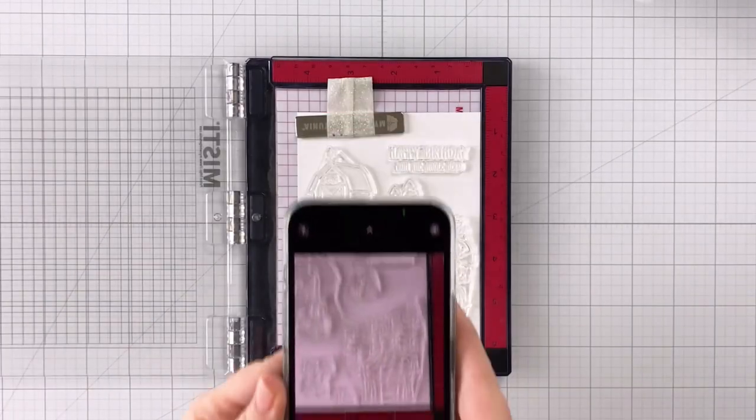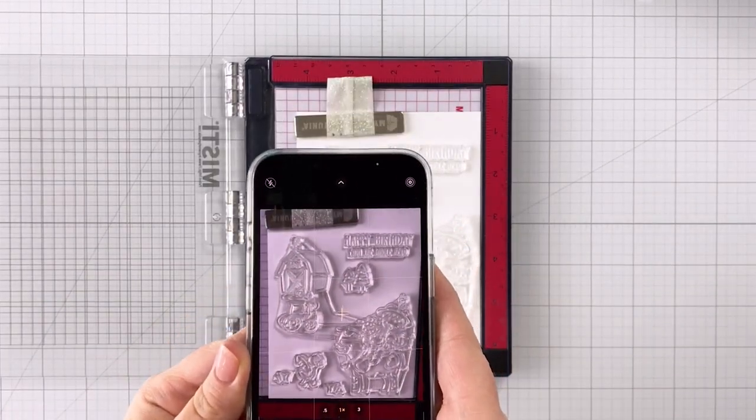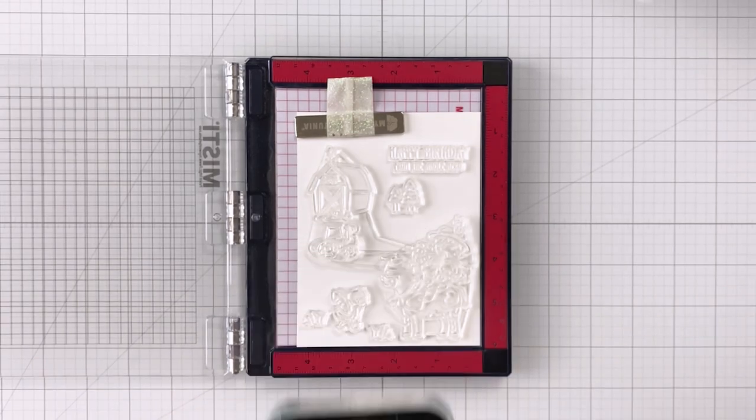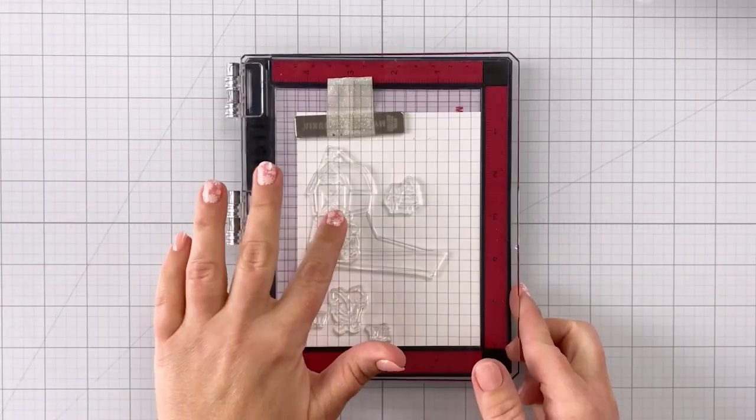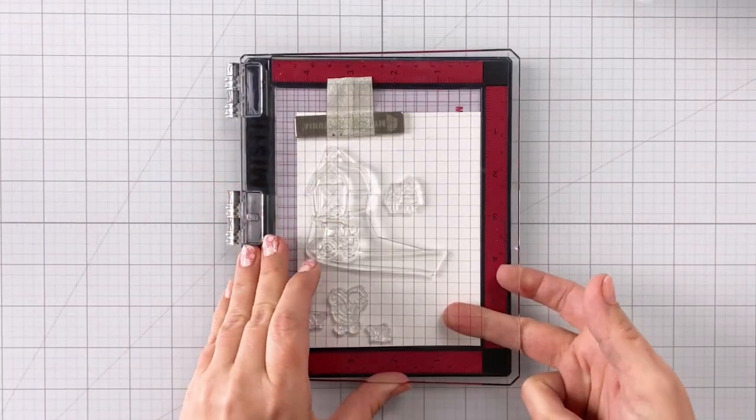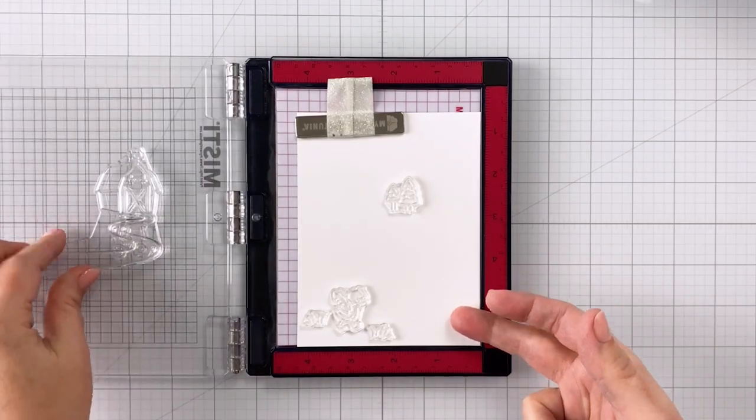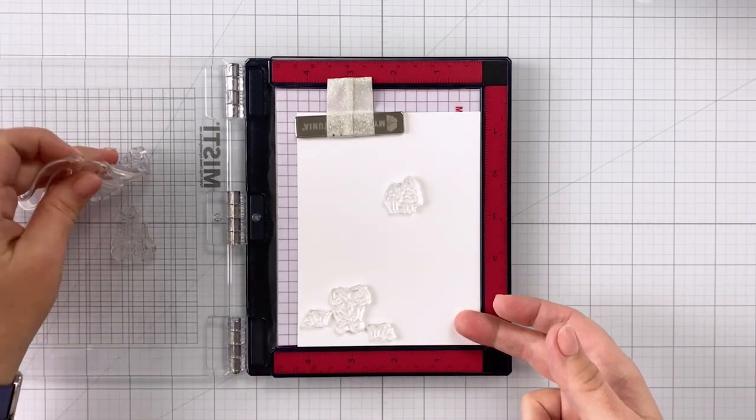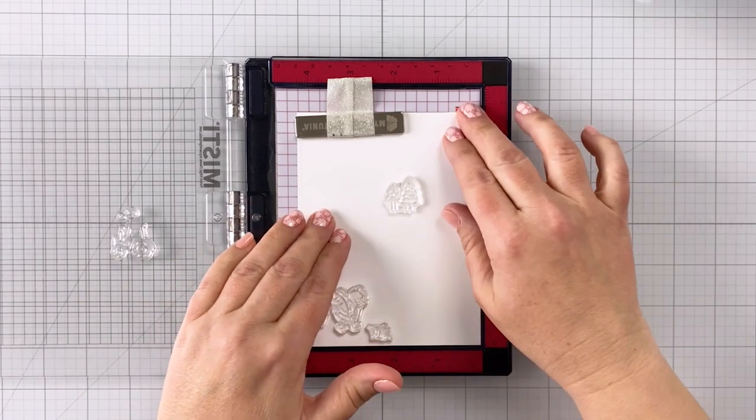I'm going to start out by positioning all of my stamps where I ultimately want them and then I'm going to take a picture with my phone. Now I can close my lid and I'm going to pick up whatever is going to be the farthest back layer of my scene that I'm creating.